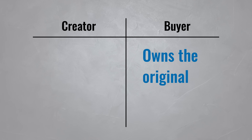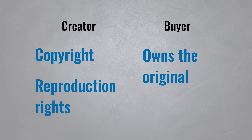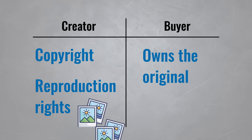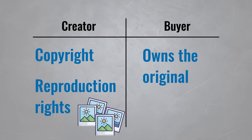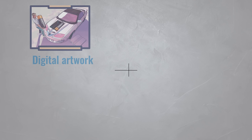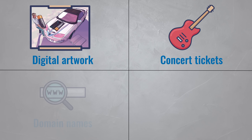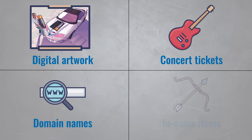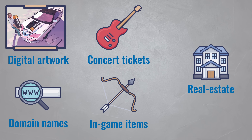Some say that NFTs give you digital bragging rights. And to make it even weirder, while the token owner owns the original artwork, the creator of the NFT retains the copyright and the reproduction rights. So an artist can sell his original artwork as an NFT but still sell prints. Aside from digital art, NFTs can also be used to sell concert tickets, domain names, rare in-game items, real estate, and basically anything that is unique and needs proof of ownership.